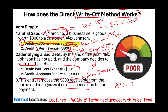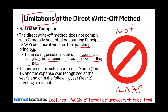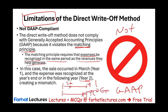For example, if the sale took place in March of year one but the account was written off in year two, the expense appears in a different year than the sale — a violation of the matching principle. Sometimes you wait until year two or year three thinking the customer will pay, and they never do. That's why the direct write-off method is not GAAP compliant.